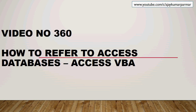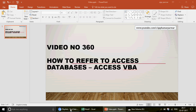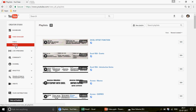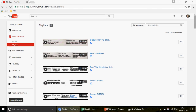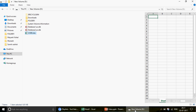Welcome to video number 360. In this video we are going to discuss Access VBA, and I'm going to show you how, using Access VBA, you can refer to different databases - database A, database B, database C, or whatever. If you're watching the channel for the first time, a very warm welcome. We have 360 videos on Access, Access VBA, Excel, and Excel VBA. Today I'm going to make a code in Access itself and learn how to define Access databases using Access VBA.